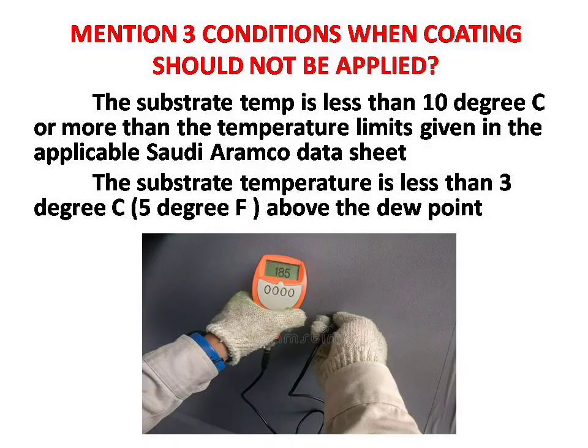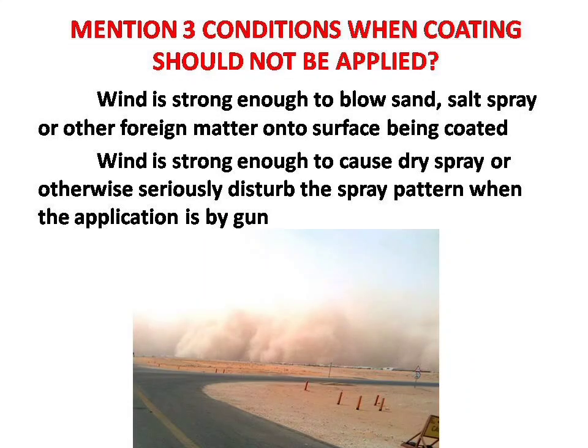First question: mention three conditions when coating should not be applied. Answers are: the substrate temperature is less than 10 degrees Celsius or more than the temperature limits given in the applicable Saudi Aramco datasheet; the substrate temperature is less than 3 degrees Celsius above the dew point; wind is strong enough to blow sand, salt spray or other foreign matter onto the surface being coated; or wind is strong enough to cause dry spray or otherwise seriously disturb the spray pattern when the application is by gun.